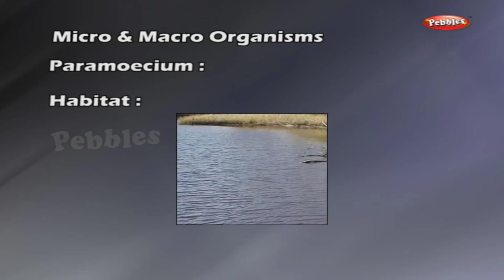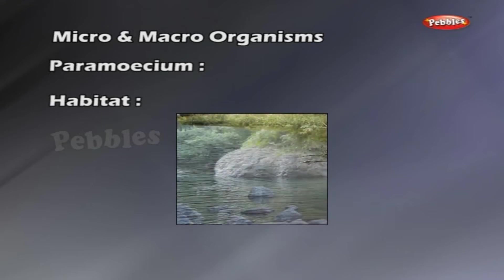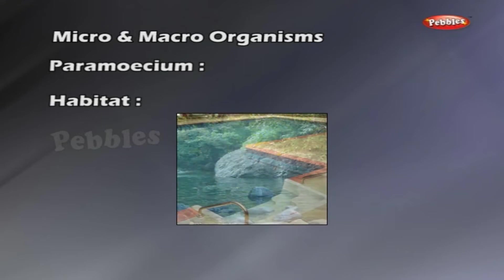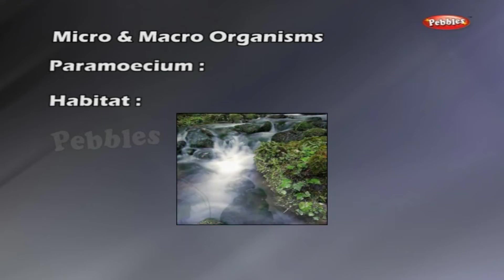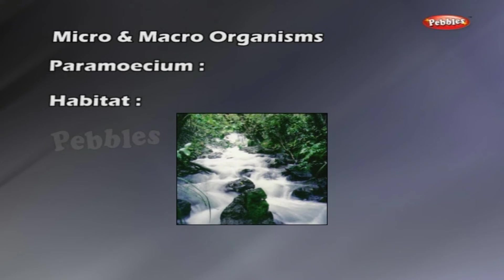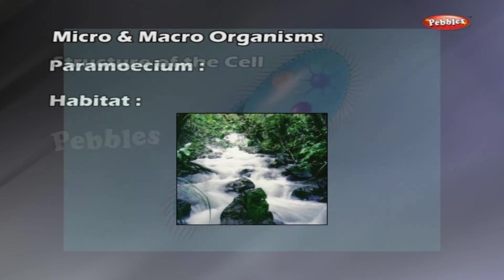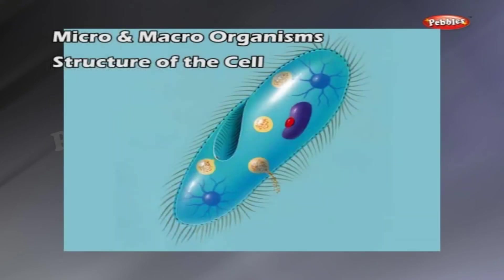Paramecium: Habitat. It is found in freshwater — ponds, pools, lakes, rivers and streams. It feeds on bacteria and tiny protozoans. Structure of the cell: a Paramecium cell measures about 170 to 290 microns in length and 100 to 120 microns in breadth.